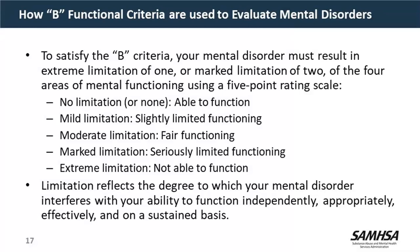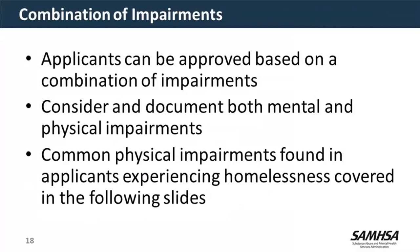The C criteria applies when there is evidence of a two-year history of treatment and the person is not able to function independently — meaning they need supervision to carry out their ADLs, supervision to ensure medication compliance, or they're not able to go out alone. Applicants can also be approved based on a combination of impairments, and we can consider and document both mental and physical impairments together. Common physical impairments found in applicants experiencing homelessness are covered in the following slides.